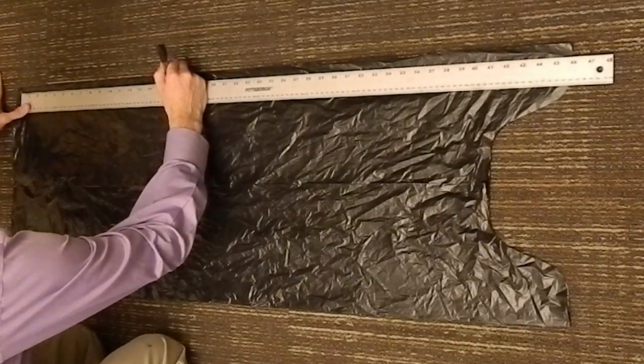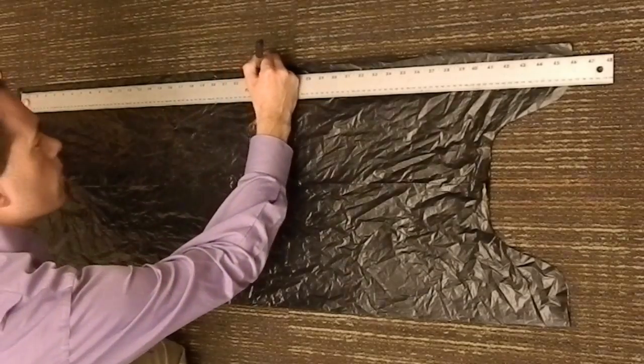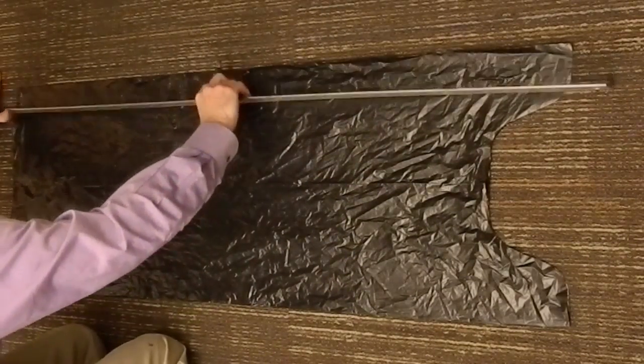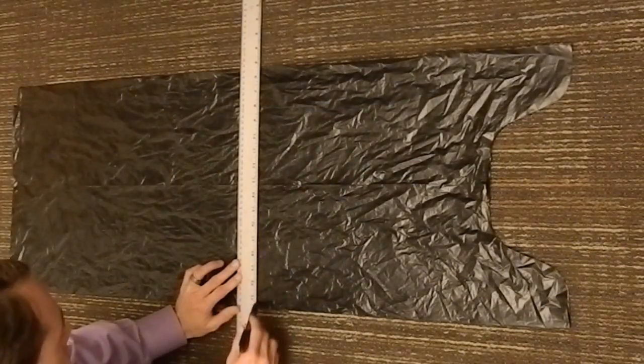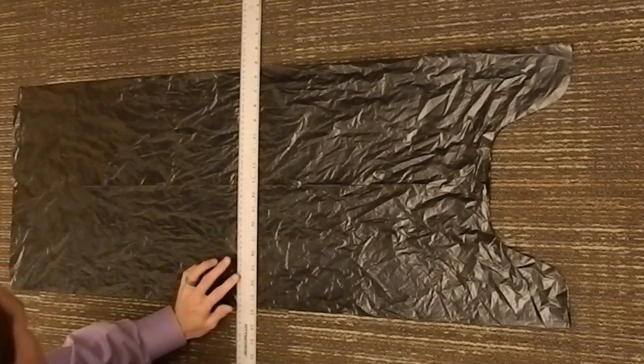I'm going to quickly mark the other side so I can draw lines across to make my squares. Here I'm marking the base of the kite, which is the back edge.